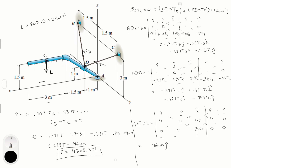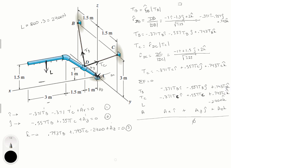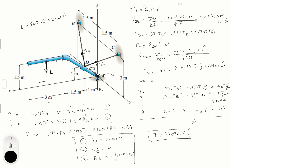Now we found the tension. With this value of T we go back to equations 1, 2, and 3 and substitute. From equation 1 we get Ax equals 3200 newtons. From equation 2 we get Ay equals 0. From equation 3 we get Ac equals negative 400 newtons. And T — which is both TB and TC — is 4308.8 newtons. Those are all the final answers.